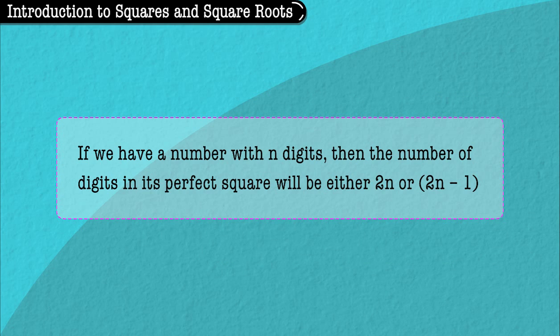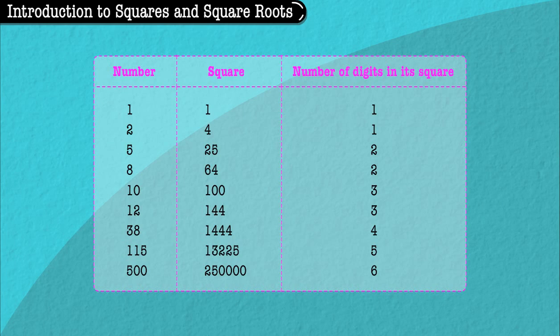then the number of digits in its perfect square will be either 2n or 2n-1. Given here is a table which will make the concept clear. Have a look.